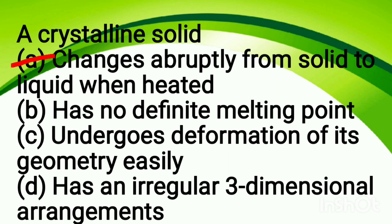Crystalline solids have a definite melting point, and the heat of fusion point is also very definite — at one fixed point it starts to melt. So when we heat a crystalline solid, it goes abruptly to liquid. In contrast, amorphous solids have no definite melting point or definite heat of fusion, so they go slowly from solid to liquid. Crystalline solids go abruptly to liquid form.